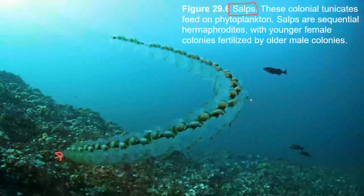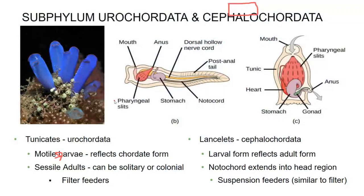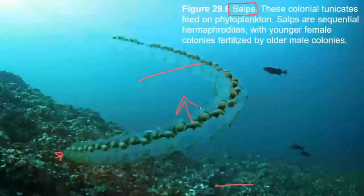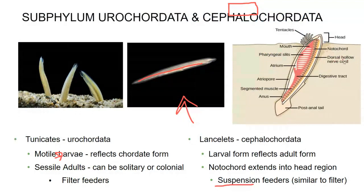The lancelets are named after their blade-like shape. They're actually pretty small and usually bury themselves in the ground. They're what's called suspension feeders, feeding on very small food particles actually suspended in the water. They very much reflect the urochordata larva — they have a similar body plan with a notochord and dorsal spinal cord, but they also have segmented muscles, which are persistent in larger fish.